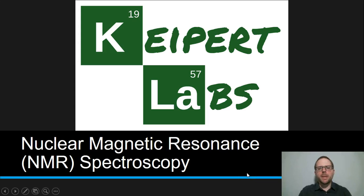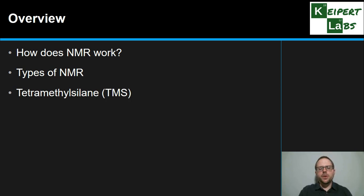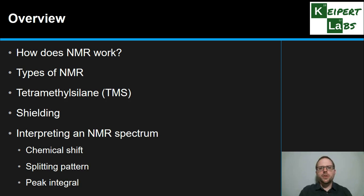Hi everyone, welcome to this episode of Kaipit Labs. In today's episode we're going to talk about nuclear magnetic resonance or NMR spectroscopy. We're going to start by looking at how NMR works, the different types of NMR, the internal standard tetramethylsilane or TMS, a fundamental concept called shielding, and then how to interpret an NMR spectrum — specifically chemical shift, the splitting pattern, and the peak integral.